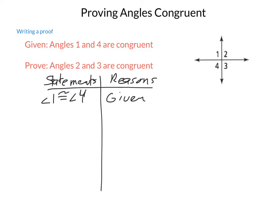That's simply a given, because it was stated in our information. Next, looking at our relationships here, angles 4 and 2 are vertical angles. So, we can state that angle 4 is congruent to angle 2, and that is our vertical angle theorem, or theorem 2.1.